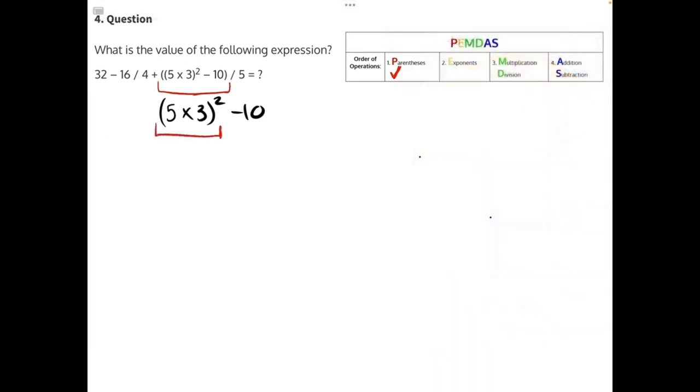Within the parentheses, 5 times 3 would give us 15. 15 is still squared, and the minus 10 is still after.